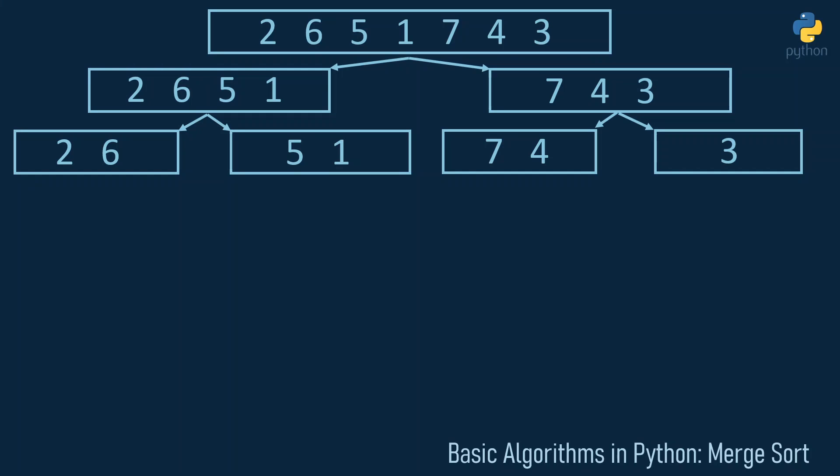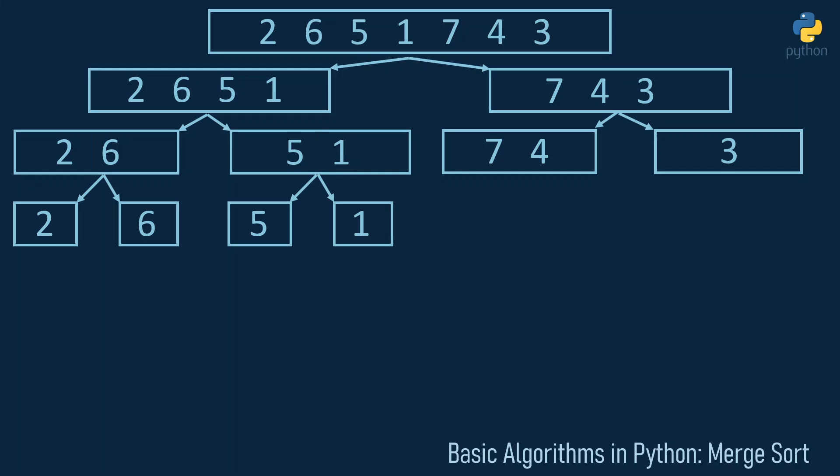When we have one entry left, the array is already sorted and we can start combining. But we need one more dividing step first: the two and the six are divided, the five and the one are divided, the seven and the four are divided, and the three is left untouched. Now that we've divided the array into sub-arrays each containing only one element, we can start with the merging step.